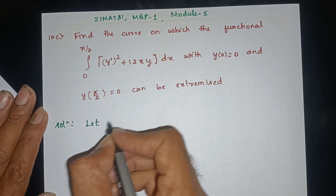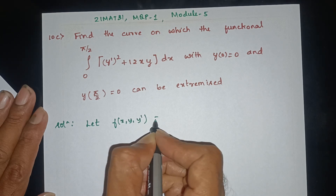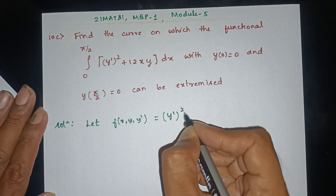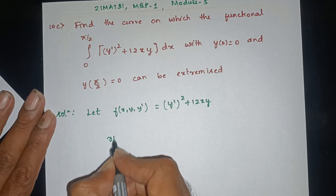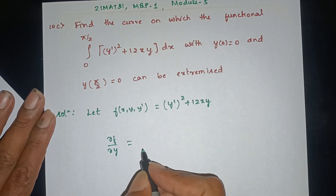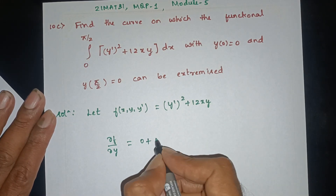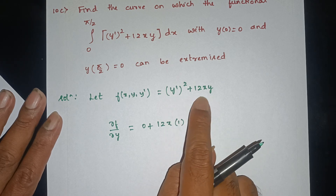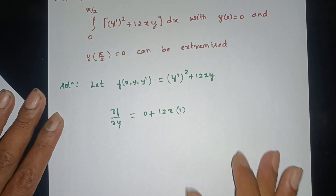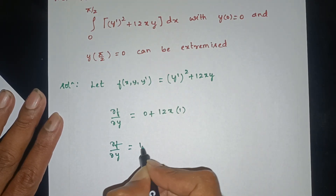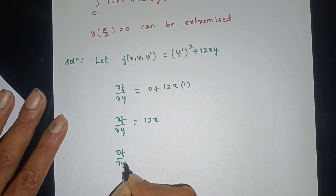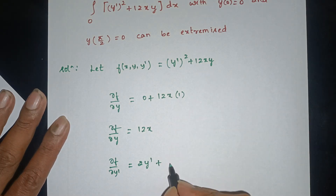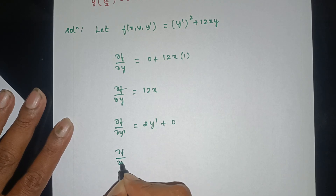First, let F(x, y, y') = y'² + 2λxy. Now compute the partial derivatives: ∂F/∂y = 2λx. Next, ∂F/∂y' — differentiating y'² with respect to y' gives 2y'. So ∂F/∂y' = 2y'.